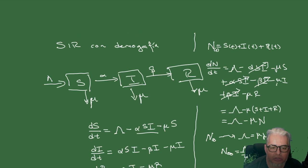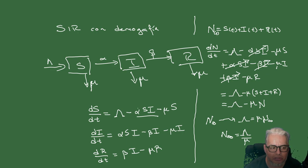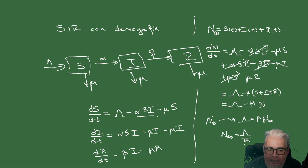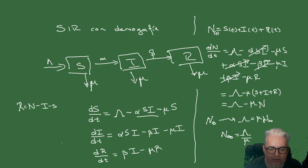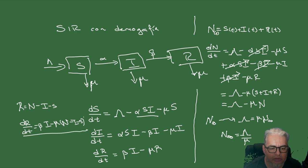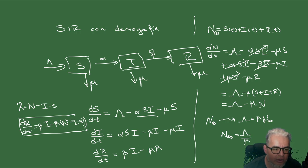Si nos fijamos en el sistema que escribimos, la ecuación para R va a ser redundante, porque R = N - I - S. Entonces dR/dt = beta·I - mu·(N - I - S), y la última ecuación es redundante. Pueden hacer el ejercicio de calcular la matriz Jacobiana y ver que hay una columna que es combinación lineal de las otras.